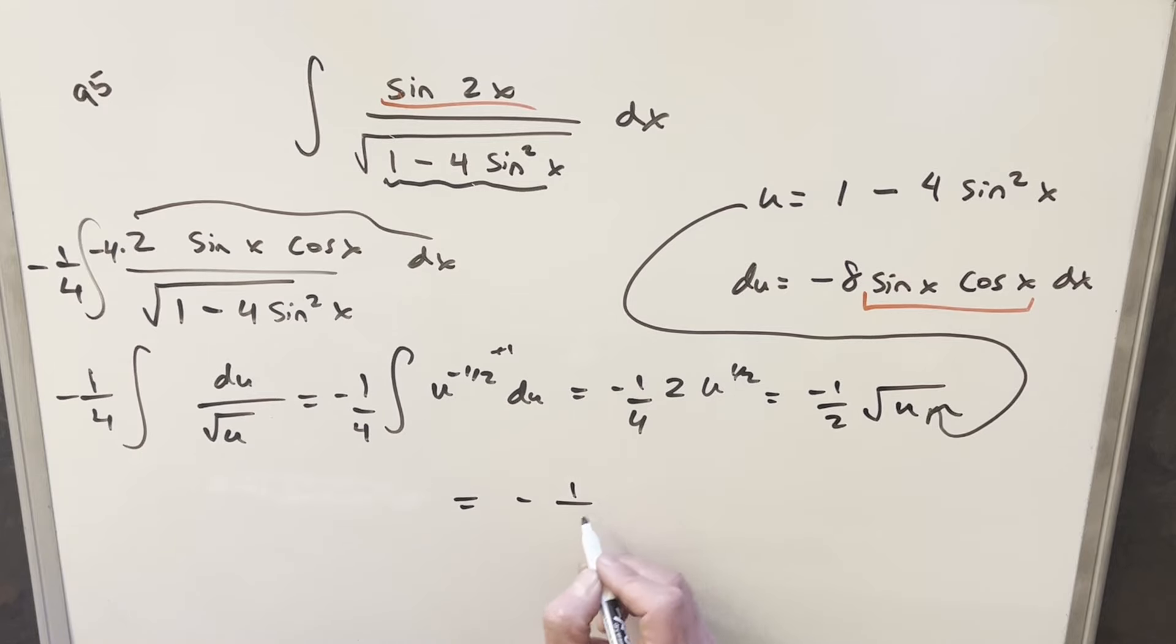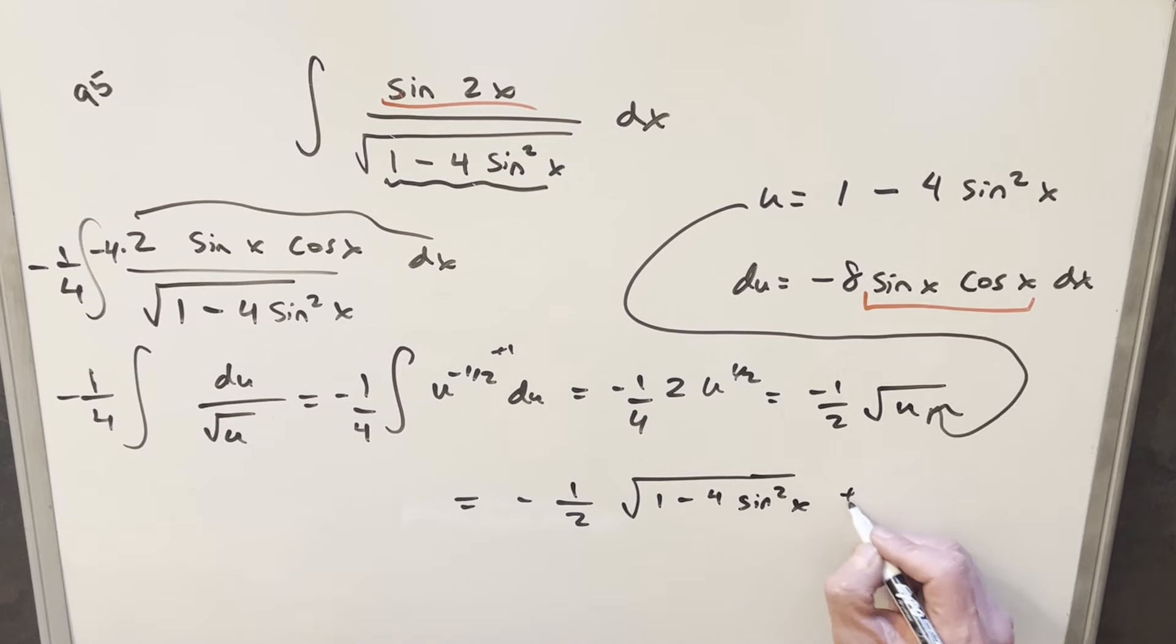So for my final solution, we just have minus 1 half square root of this thing, which is 1 minus 4 sine squared x. Put a plus c, and that's it.